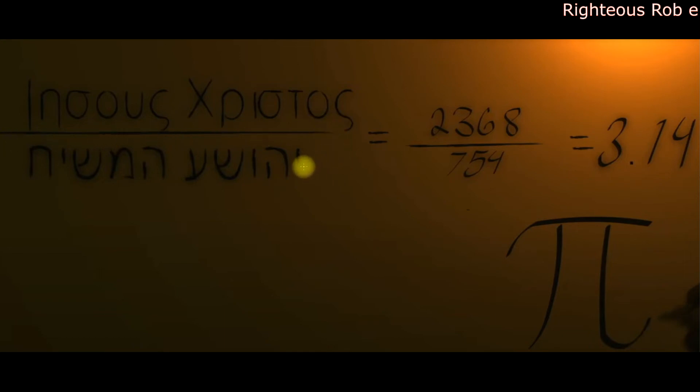When divided by Yahushua Hamashiach—Jesus the one who saves, Jesus the Messiah in Hebrew: 2368, the Greek sum total letter value, divided by 754, the Hebrew matria letter value, encodes Pi to the name Jesus Christ in Hebrew and Greek.